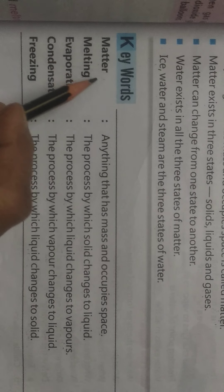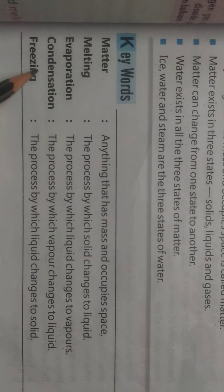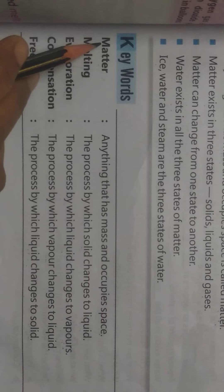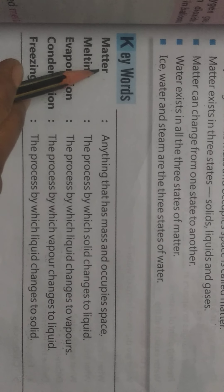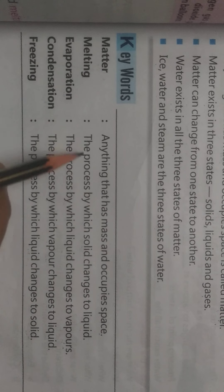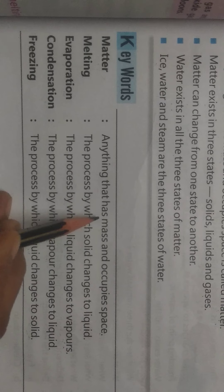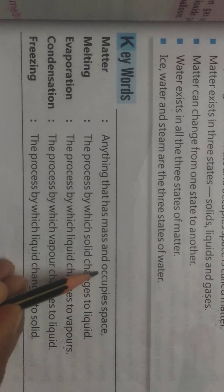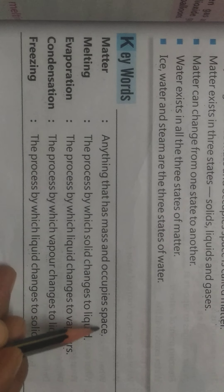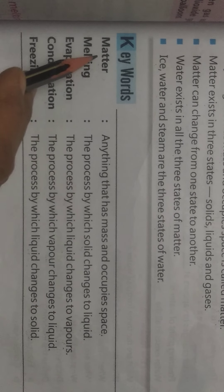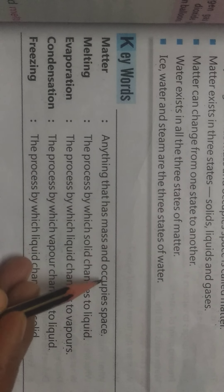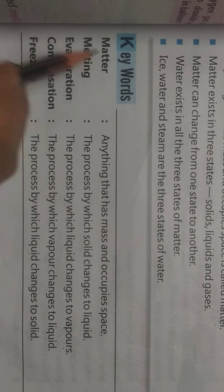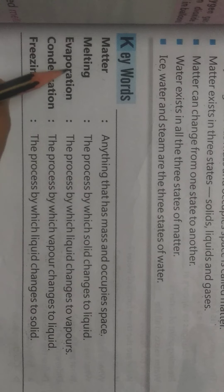Let us read. All these are different keywords. First one: M-A-T-T-E-R — matter. Children, what is matter? Anything that has mass and occupies space is called matter. We have discussed this word many times in the lesson.